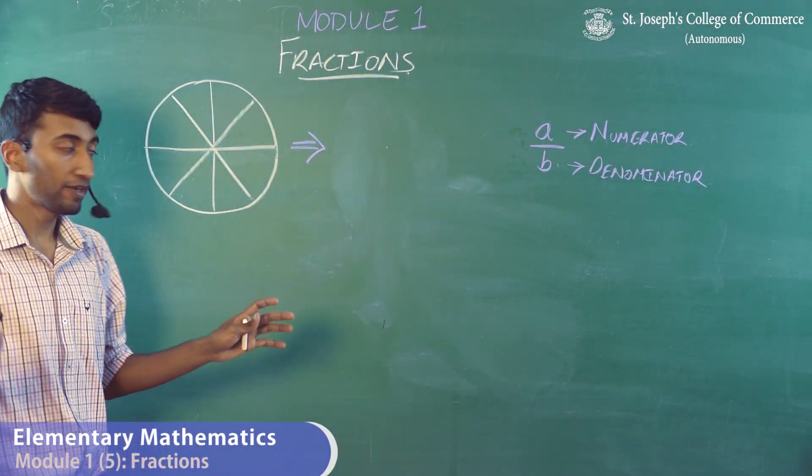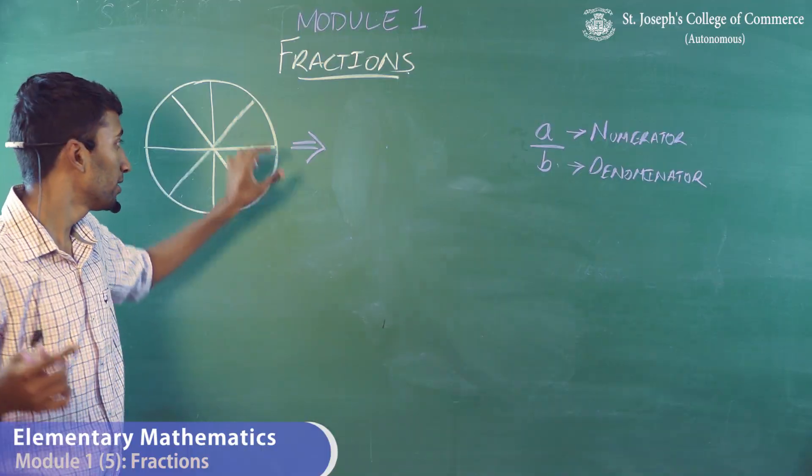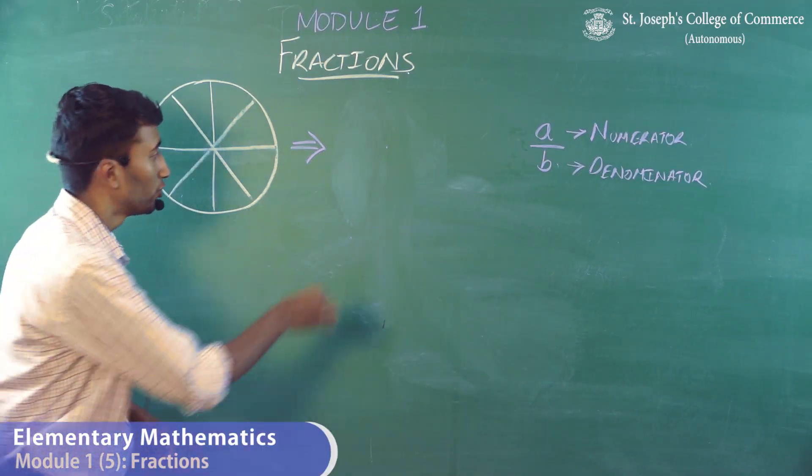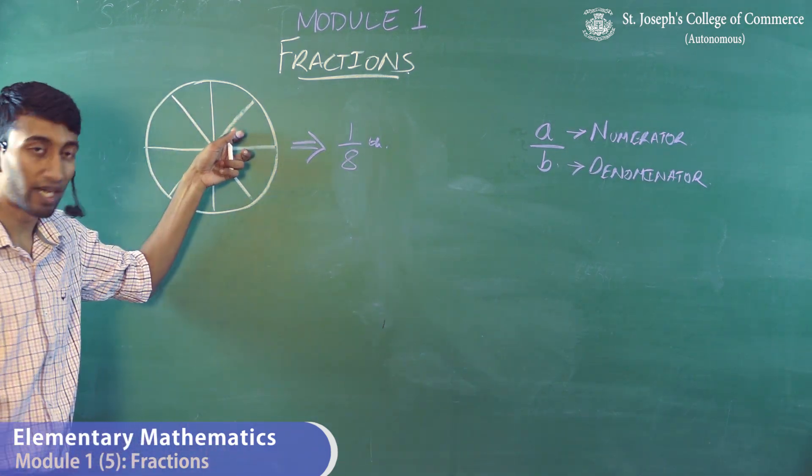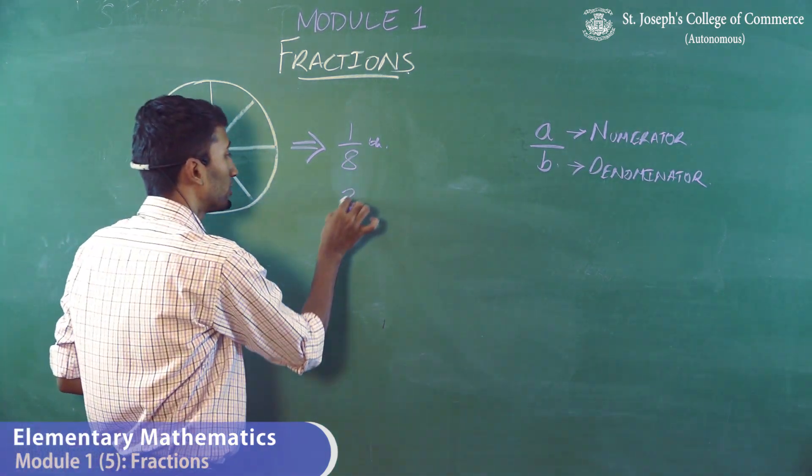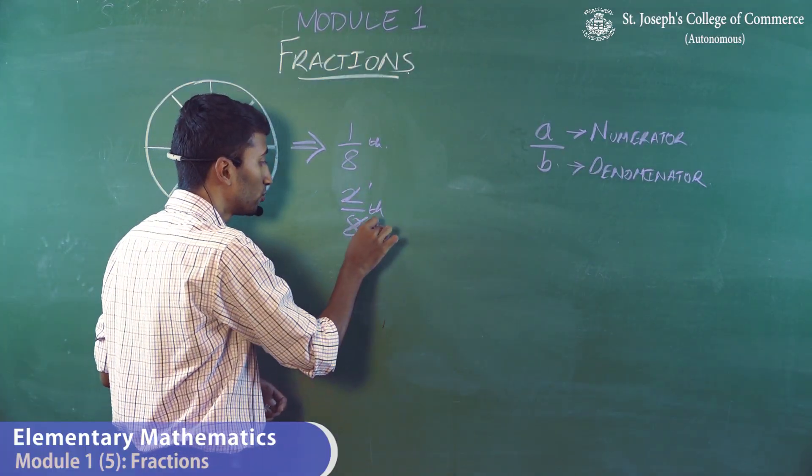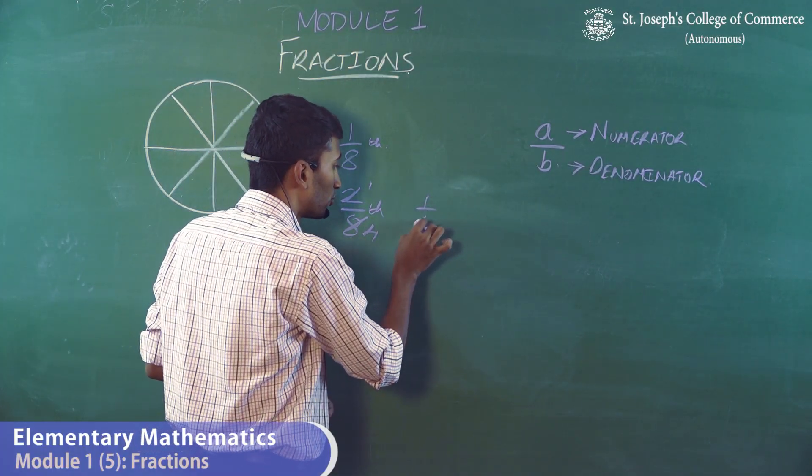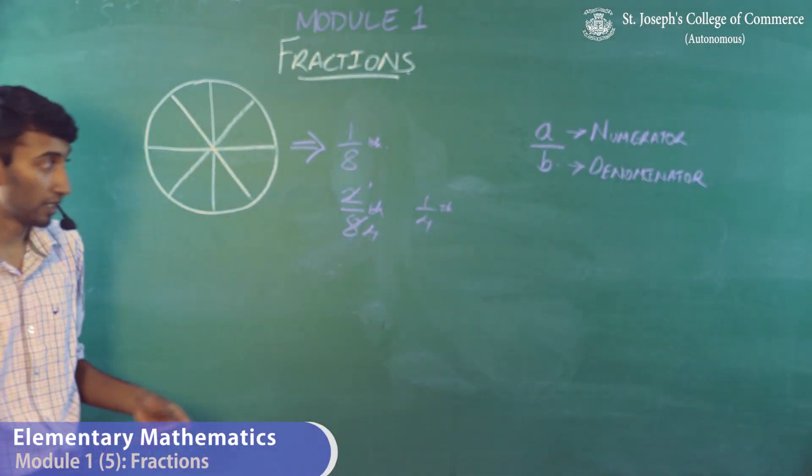Now, say for example, this is a pizza of eight parts. If you've had one part out of the eight parts, you've had one-eighth of the pizza. If you've had two parts out of the pizza, it is called two-eighths of the pizza. If I simplify it to twos are two, fours are eight, so one-fourth. That means you've had one-fourth of a pizza.